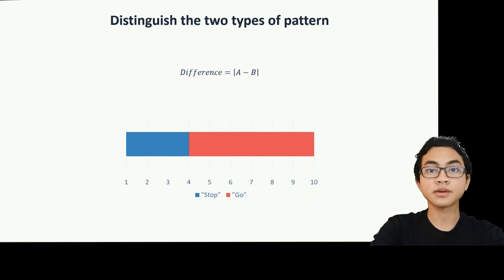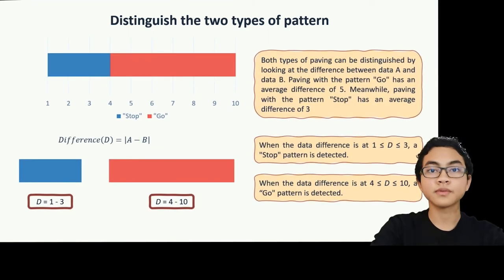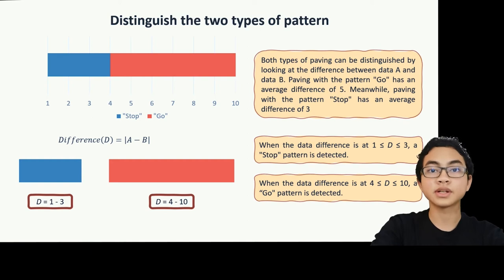If the detection area is made based on the difference between data A and data B: the go pattern has an average difference of 5, while the stop pattern has an average difference of 3. So if the difference in data is between 1 and 3, a guiding block indicating stop is detected. If the difference in data is between 4 and 10, the guiding block indicating go is detected. If the difference in data is outside these ranges, the system will detect an error.